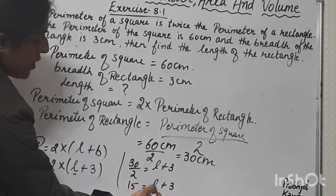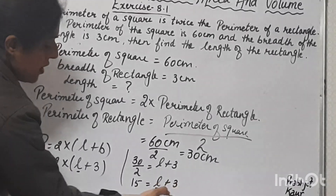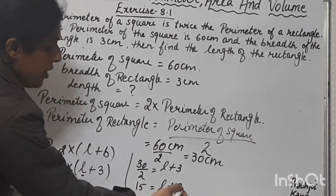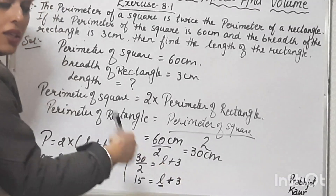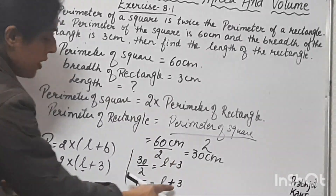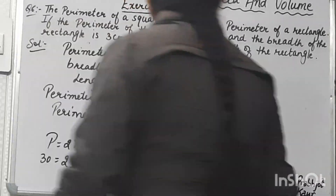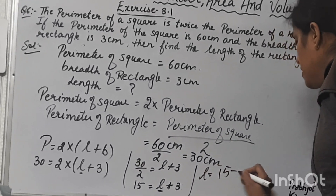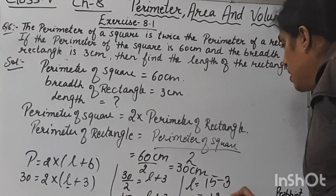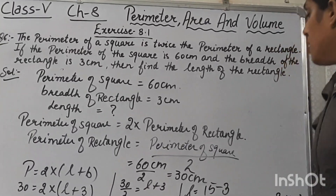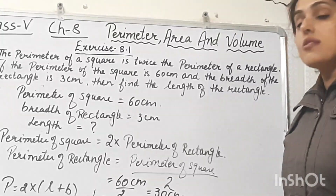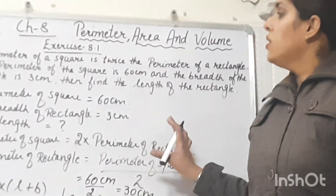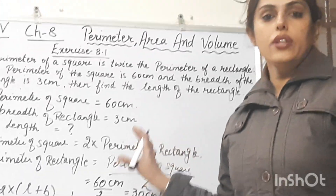Now we have to find the value of l. Since 3 is added with l, when it changes its position the sign changes from plus to minus. So l = 15 minus 3, and 15 minus 3 is 12 centimeters. The length of the rectangle is 12 centimeters. I hope this question is clear to all of you. This is question number 6 of exercise 8.1.